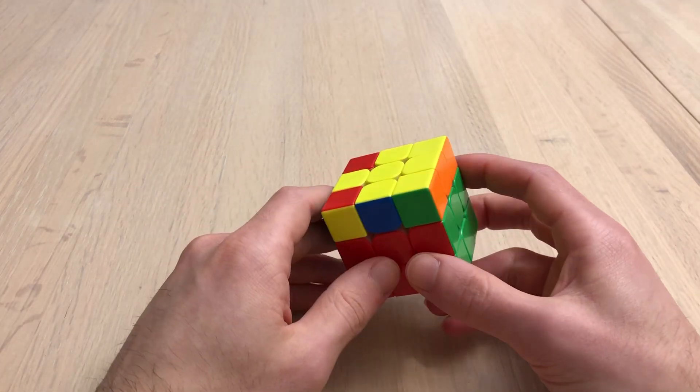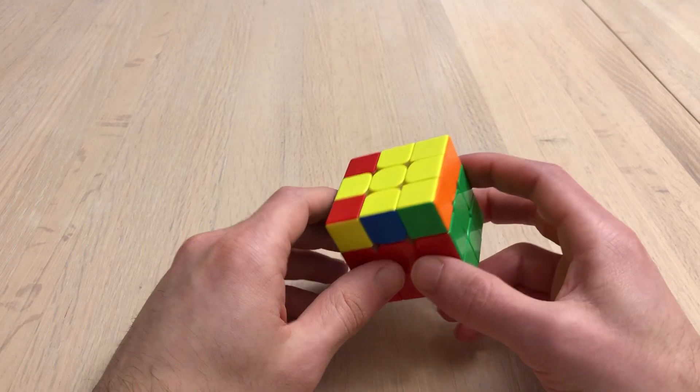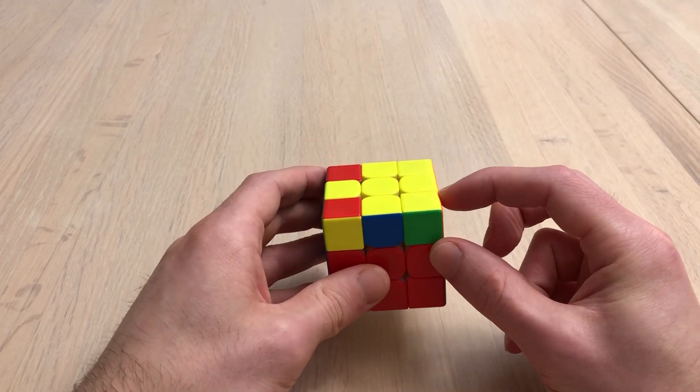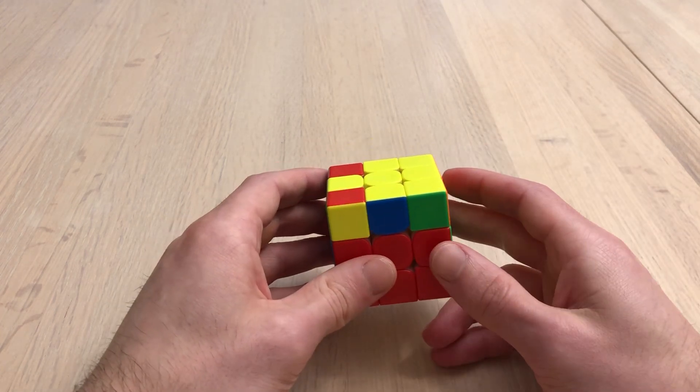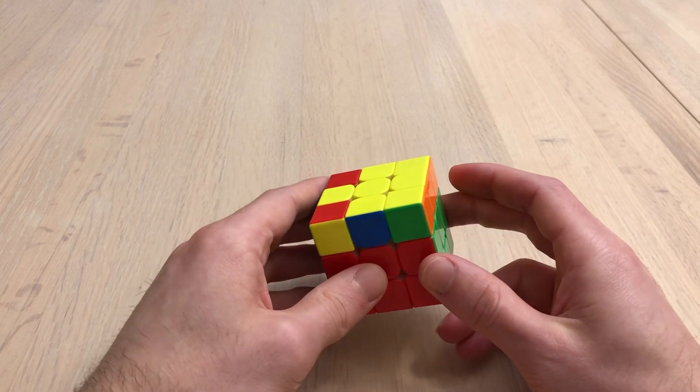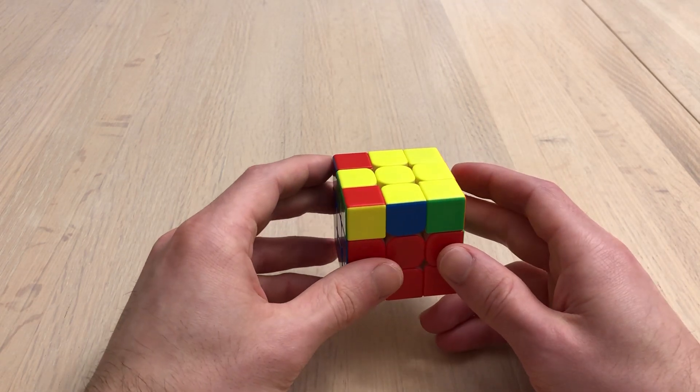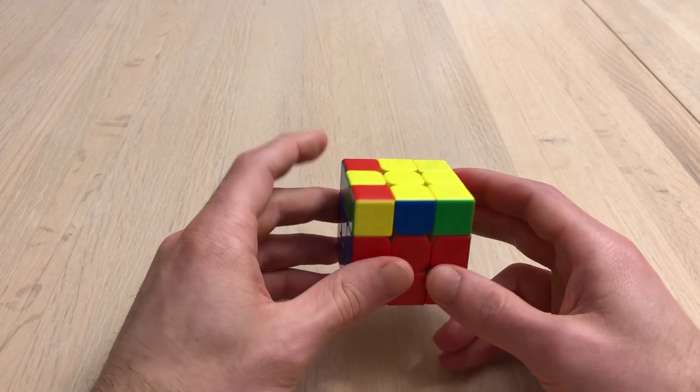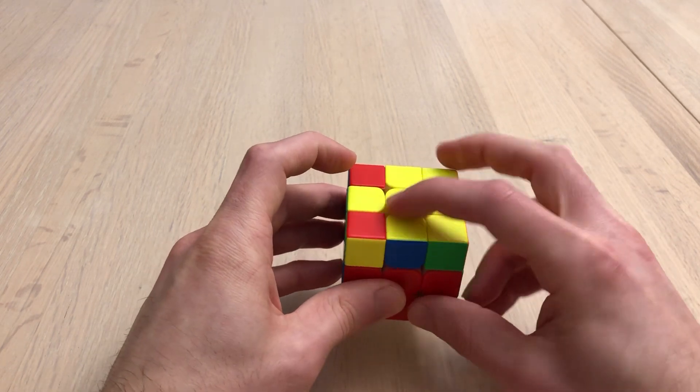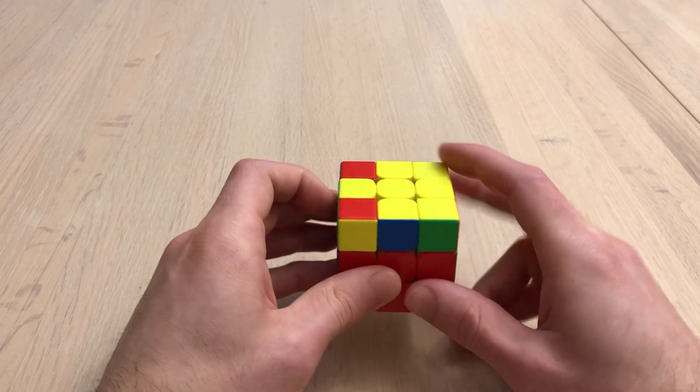If you're a beginner and using beginner's method, you might solve this case using like four algorithms or more. And then for 2-look OLL PLL, you might use again four, well in this case three, because you already have the cross on top.